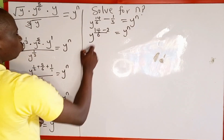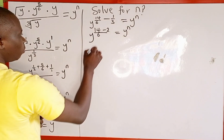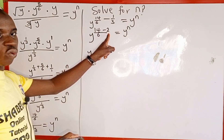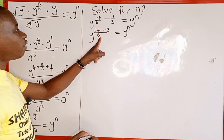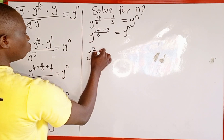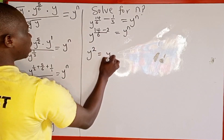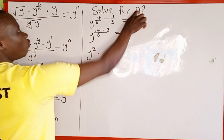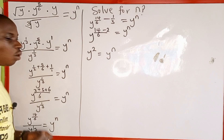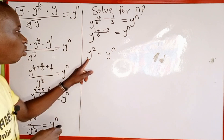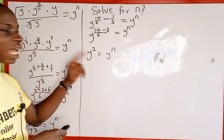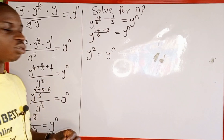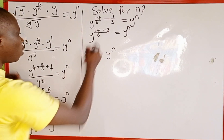Simplifying the power: 14 minus 2 is 12, then 12 divided by 6 is 2. So this is the same as y to the power of 2, which equals y to the power of n. Recalling the property of indices — when the bases are the same and there is an equality sign, the powers are also equal. We just equate the powers.